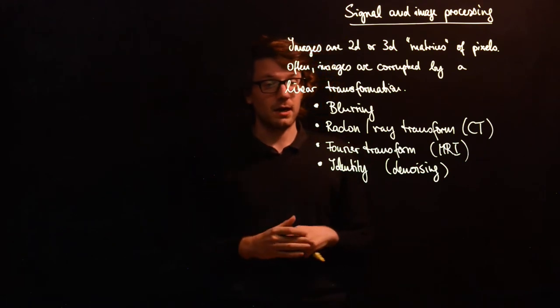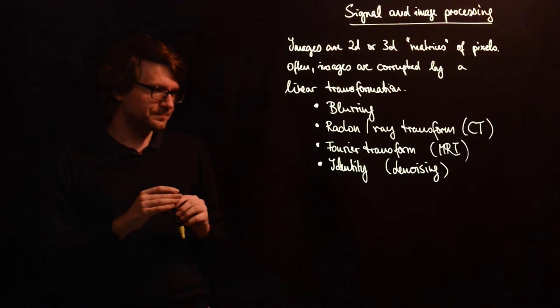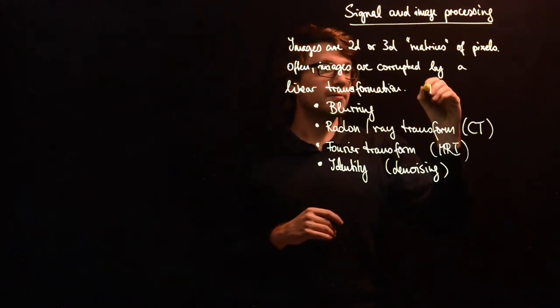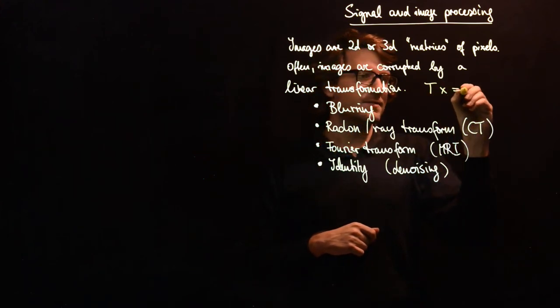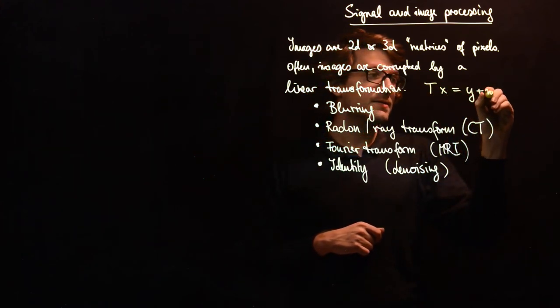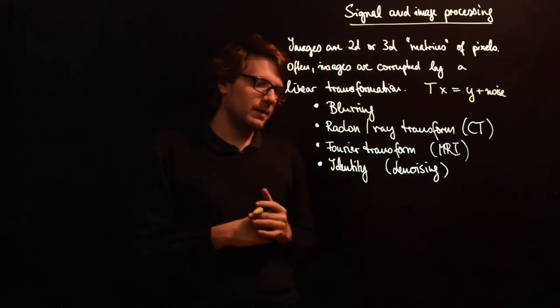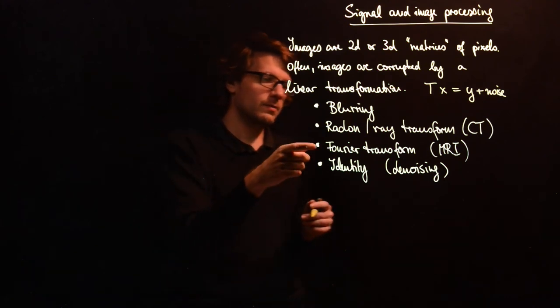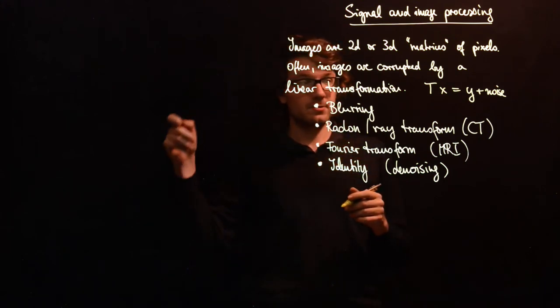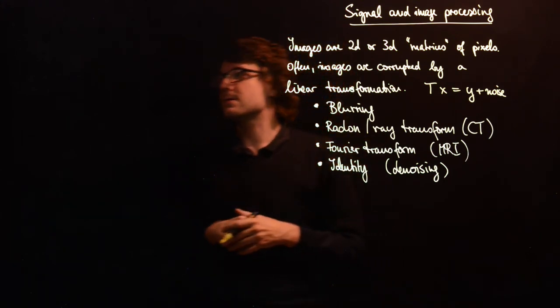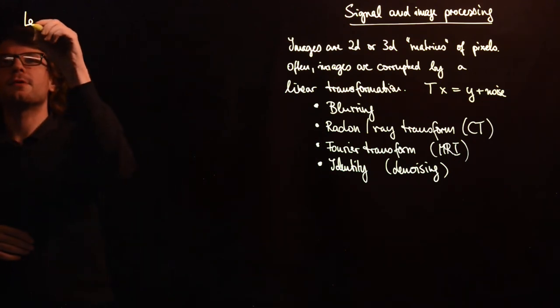So the linear transform I will denote it by T. So TX gives you an image y plus some noise, and the noise is usually the problem because at least for the three transforms here, the noise is actually amplified if you want to go back from the transformed image to the original image.